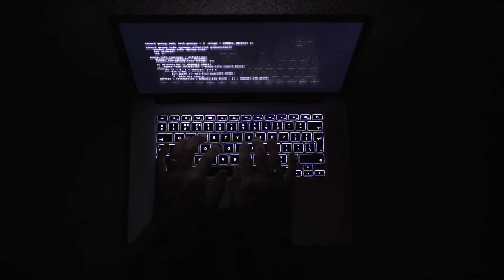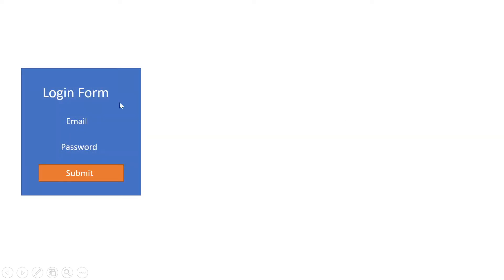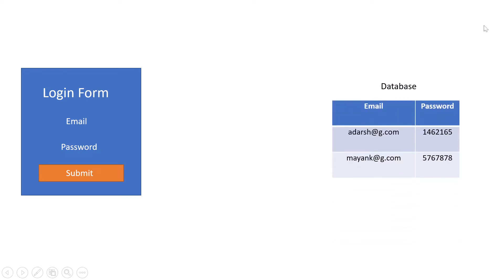So without any delay let's get started. The first thing — let's see what is an API. An API is the Application Programming Interface, meaning it is a type of middleware that allows two applications to talk to each other. Let me simplify it with the help of an example.